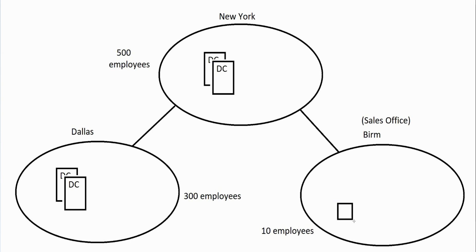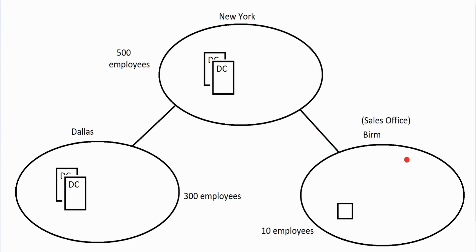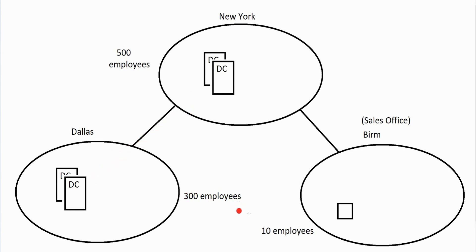Here's the problem: client computers in Birmingham trying to authenticate have to cross over to New York using the WAN connection, and users are complaining it's slow. We could put a full-blown domain controller in Birmingham, but those are all writable — changes replicate back and forth. If something got corrupted in Birmingham because there's no IT staff monitoring it, that corruption could replicate to New York, then Dallas, and corrupt the entire domain.